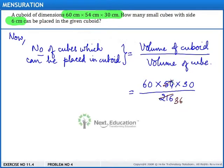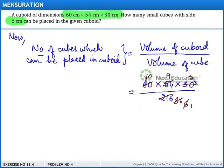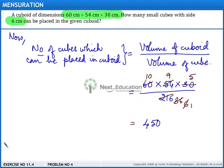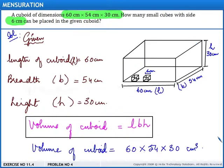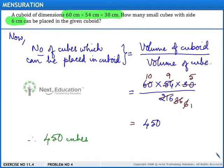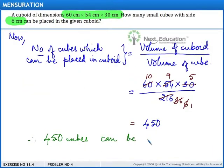Simplifying: 216 = 6 × 36; dividing 60 by 6 gives 10, 54 by 6 gives 9, and 30 by 6 gives 5. This leaves us with 10 multiplied by 9 multiplied by 5, which gives 450. So 450 cubes with side 6 centimeters can be placed in the given cuboid.